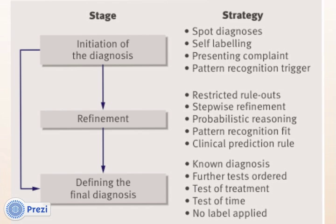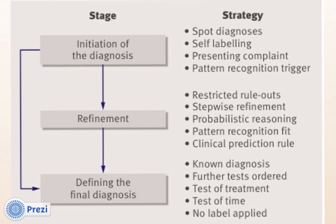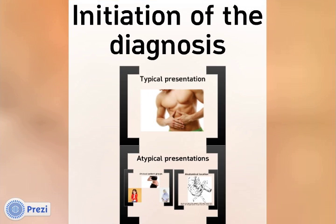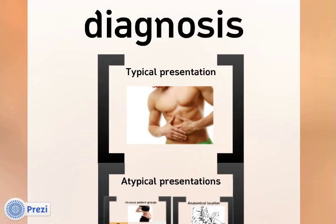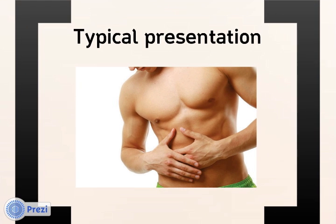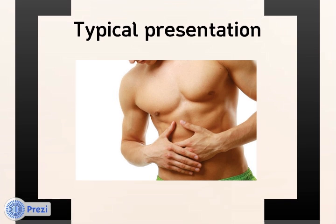So how might a patient with acute appendicitis present to you? This may be in the typical way: a patient aged between 10 and 30, with a short 48–72 hour history of migratory abdominal pain associated with systemic features of illness, such as loss of appetite and general malaise.